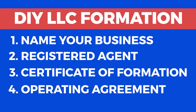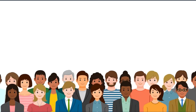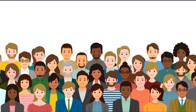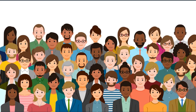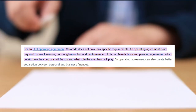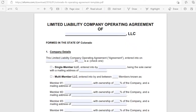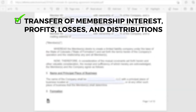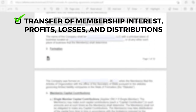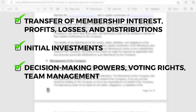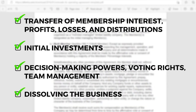Step 4: Preparing an Operating Agreement. An operating agreement is a good idea to have in place with the other members if your LLC has more than one member, although a limited liability company operating agreement is not required in Colorado. Your operating agreement should clarify how your company will handle big-picture issues. These include the transfer of membership interest, profits, losses and distributions, initial investments, decision-making powers, voting rights, team management, and dissolving the business.